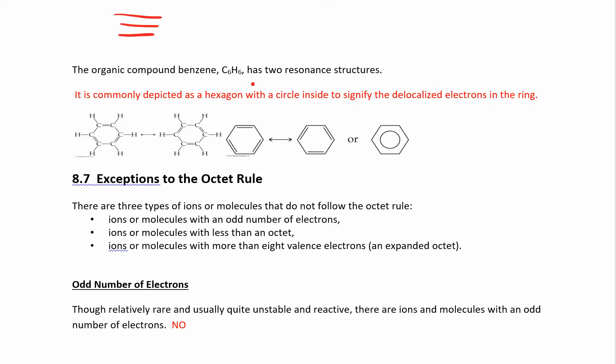As far as resonance structures are concerned, benzene, again, this is something you're going to see a lot in organic chemistry. Benzene has six carbons in a ring, and they have alternating single and double bonds. So you can draw a resonance structure this way or this way.